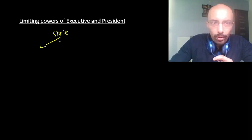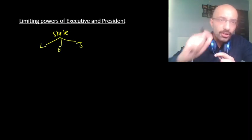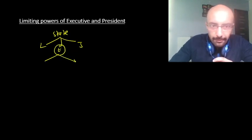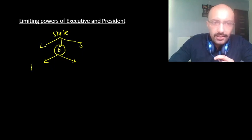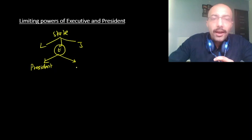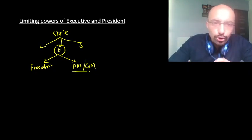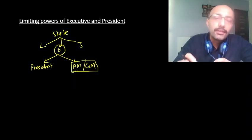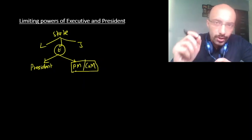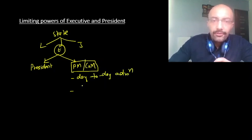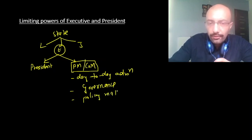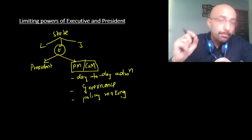Once we decided on the British cabinet system as our executive model, the executive has two main parts in practice. First is the President of India, and second is the PM and the Council of Ministers. The PM and Council of Ministers are the real executive — the real office holders who look after the day-to-day functioning, administration, governance, and policy-making of the country. The PM is called the real head.